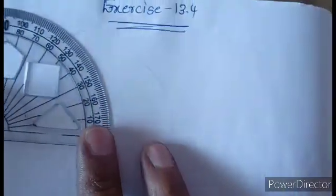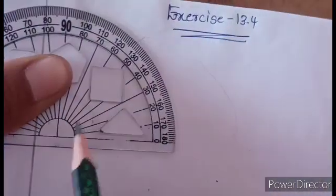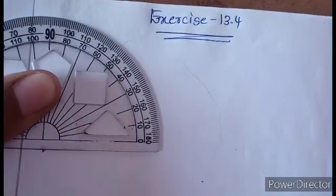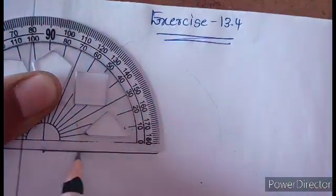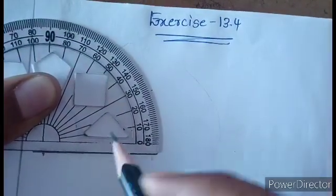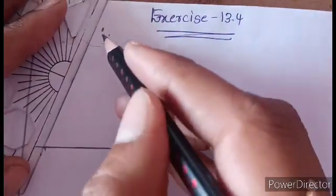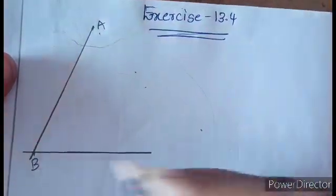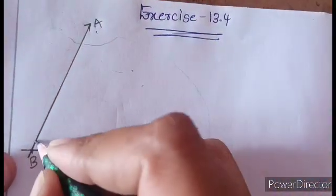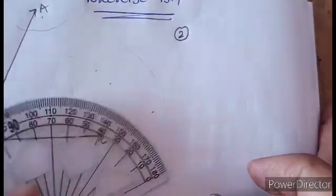First, angle ABC is equal to 65 degrees. Please make angle ABC equal to 65 degrees. You can draw angle A now. Next, angle PQR is equal to 136 degrees.